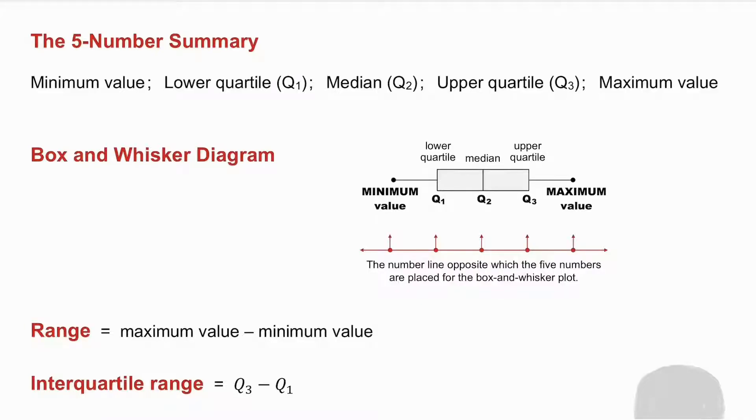To calculate the range you take the maximum value minus the minimum value. So what you are doing is you're finding the distance of your box and whisker diagram. To get the interquartile range you take the upper quartile minus the lower quartile. So here what you're doing is you're finding the length of your box.